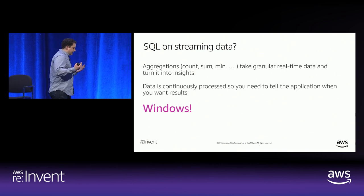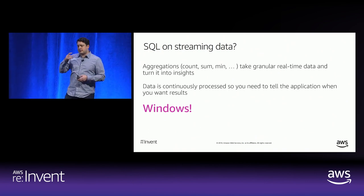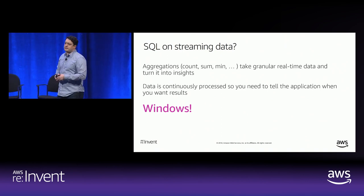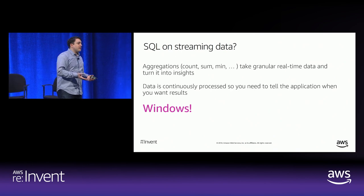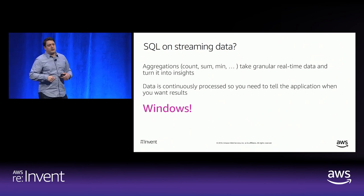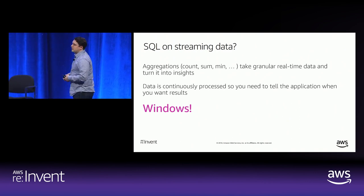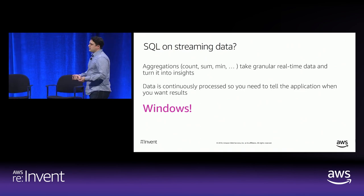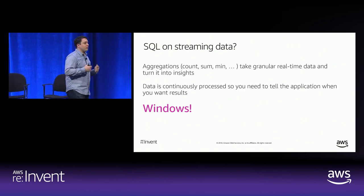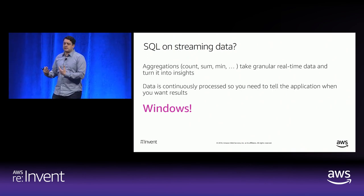Amazon Kinesis Data Analytics offers two languages: Java and SQL-based applications. The most common aggregations are things like sum, min, and max — imagine counting the number of errors or 500s on web access logs. Because data is continuous, you need some way to bound your processing, and we do that with windows. Windows allow you to determine when to start processing and when to produce a result.